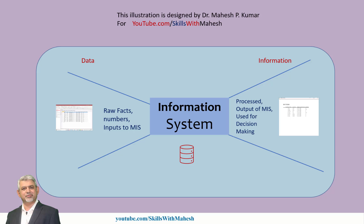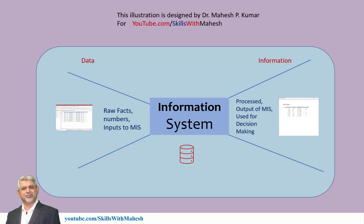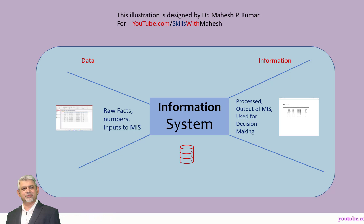Information is the output of the system. Information is created by processing the raw data. And once it has been processed and it is now an output, it can be used to make decisions.